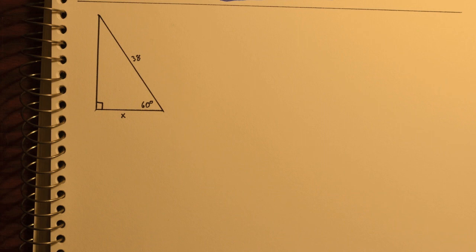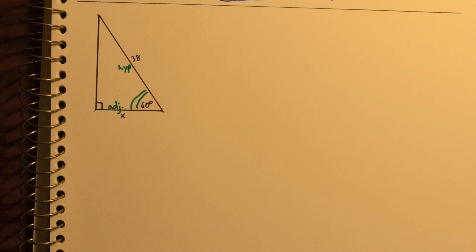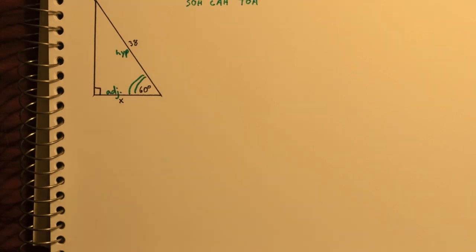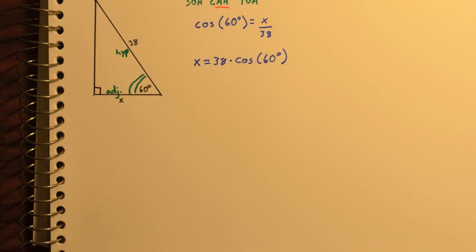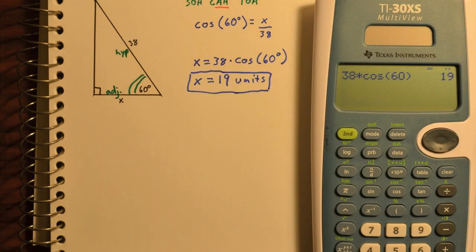One more example. Let's take a look at this one. Here we've got a 60 degree angle, x and 38. So we know the hypotenuse. We want to solve for the adjacent. That's the cosine function. So the cosine of 60 degrees is x over 38. Solving for x gives us 38 times the cosine of 60. And we get exactly 19 units.